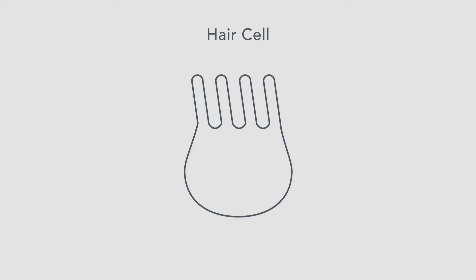The little guys responsible for all of this are the roughly 3,500 inner hair cells doing all that bouncing up and down, converting this mechanical activity into either a spike or no spike.